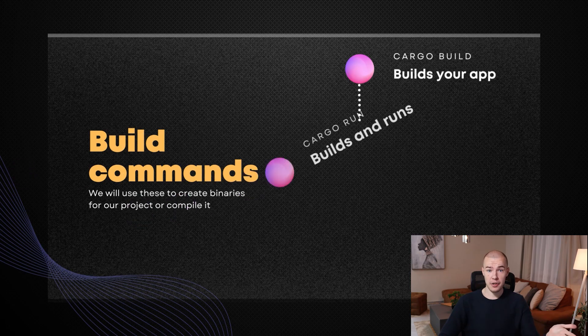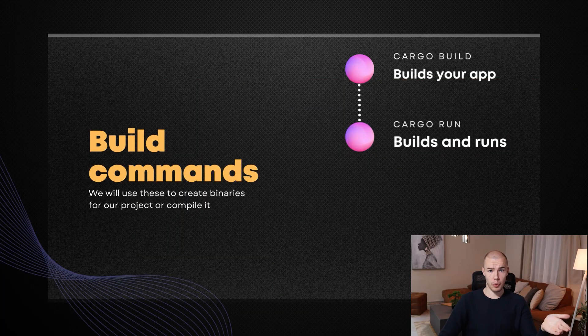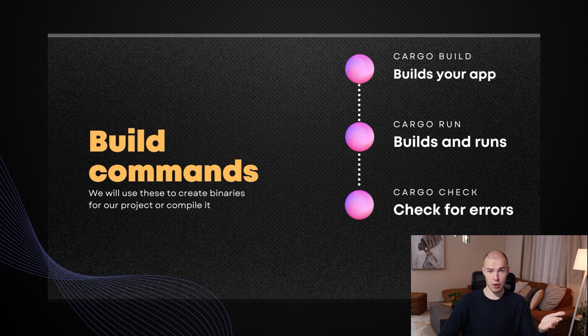Then we have the cargo run command. This one does everything that cargo build does, but also it executes the executable. So basically, it will check for errors, it will build an executable, and it will also run it. After we have covered those two, we also have the cargo check command. This one is a bit different from the previous two because it will not build an executable — it will just check for errors and see if everything is okay.